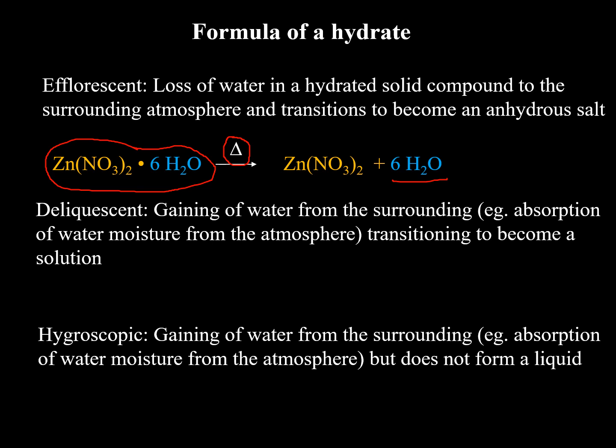We have the opposite, deliquescent, and that's when you have something or a compound, it can gain water. So it absorbs the moisture from the surroundings, from the atmosphere, and it can become a liquid. We also have a third term, hygroscopic, which is kind of like deliquescent, in that the compound will absorb water, but it doesn't form a liquid. It stays kind of a solid mush.